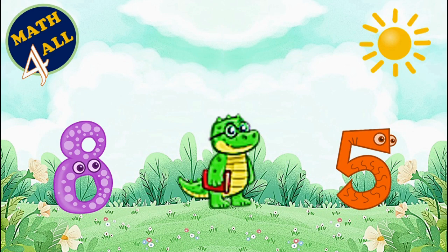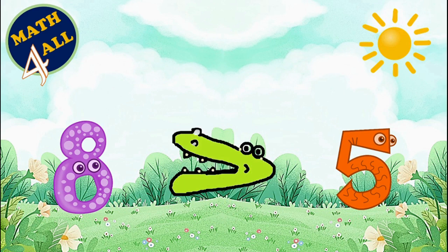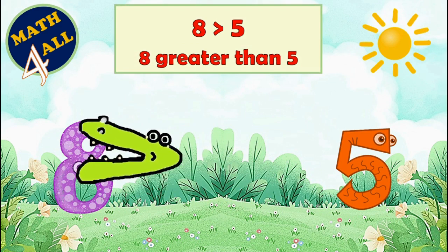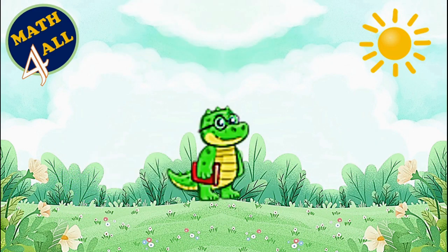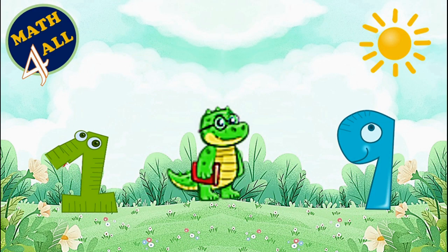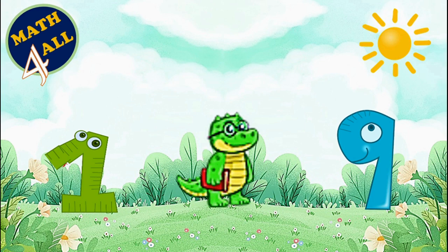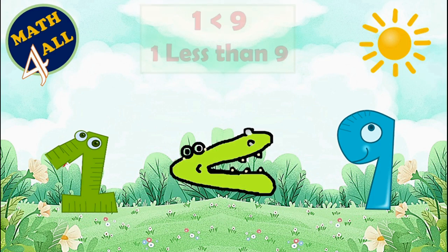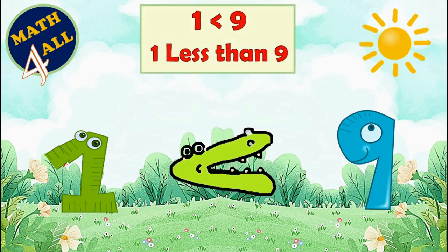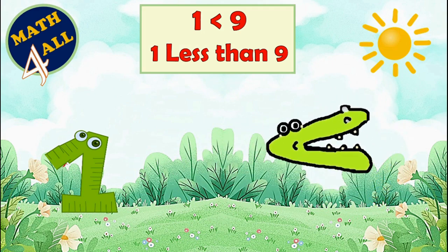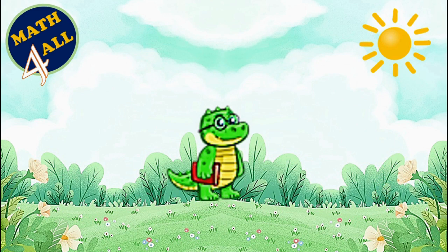When Number Gator sees two numbers, for example 8 and 5, he opens his mouth really wide toward number 8, because 8 is greater than 5. So Number Gator eats up number 8. Now he met two new numbers: 1 and 9. Again, Number Gator opens his mouth toward number 9, because 1 is less than 9, so Number Gator goes and eats number 9.